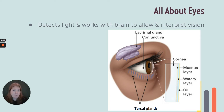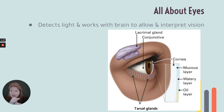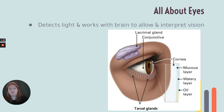And then we have the oily layer, produced by the tarsal glands, also called sebaceous glands, located between your eyelashes. So tears are really made up of three components: a mucus layer, an oil layer, and a watery layer, produced by three different glands — the lacrimal glands, the conjunctiva, and the tarsal glands.